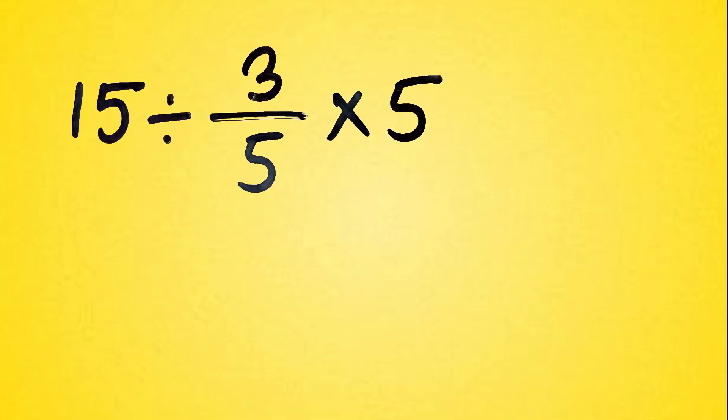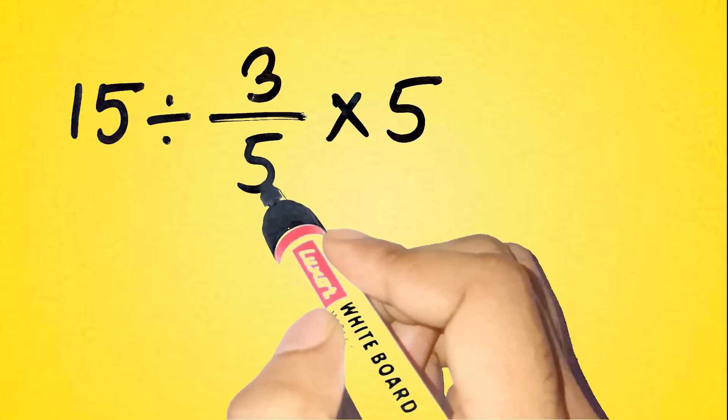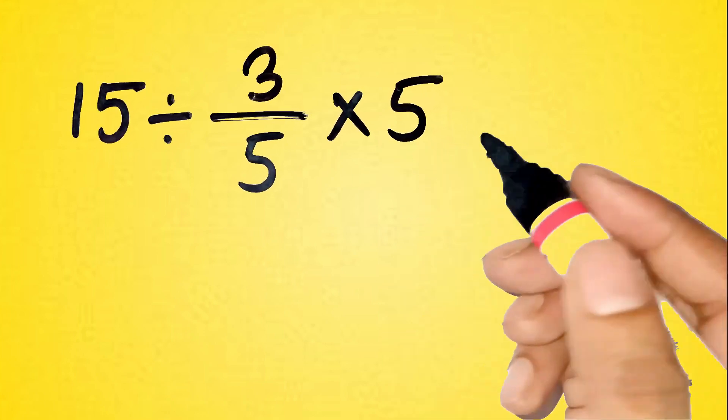Alright, here's the proper way to think about this. We have 15 divided by 3 over 5 times 5.